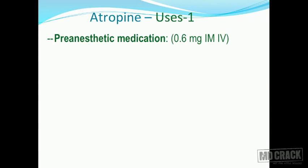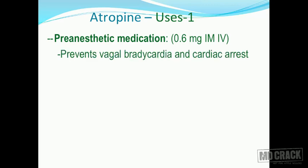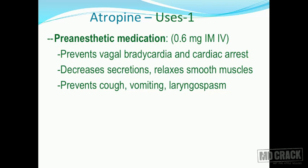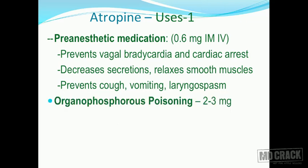Therapeutic uses of atropine: first, as pre-anesthetic medication at 0.6 mg intramuscular or intravenous. It is preferred pre-anesthetically because it prevents vagal bradycardia and cardiac arrest, decreases secretions and relaxes smooth muscles, and prevents cough, vomiting, and laryngospasm. Second, atropine is the drug of choice to treat organophosphorus compound poisoning — given at 2 to 3 mg intravenous to start with.